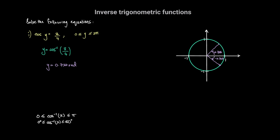If we take the corresponding angle between 0 and 2 pi radians, the cosine — the x-coordinate — would be the same as it was for the angle 0.722 radians. This angle is simply 2 pi minus 0.722 radians. The entire revolution is 2 pi radians, but we're subtracting 0.722 radians. So the other angle in the range 0 to 2 pi radians for which cosine of that angle equals 3 over 4 is 2 pi minus 0.722 radians.